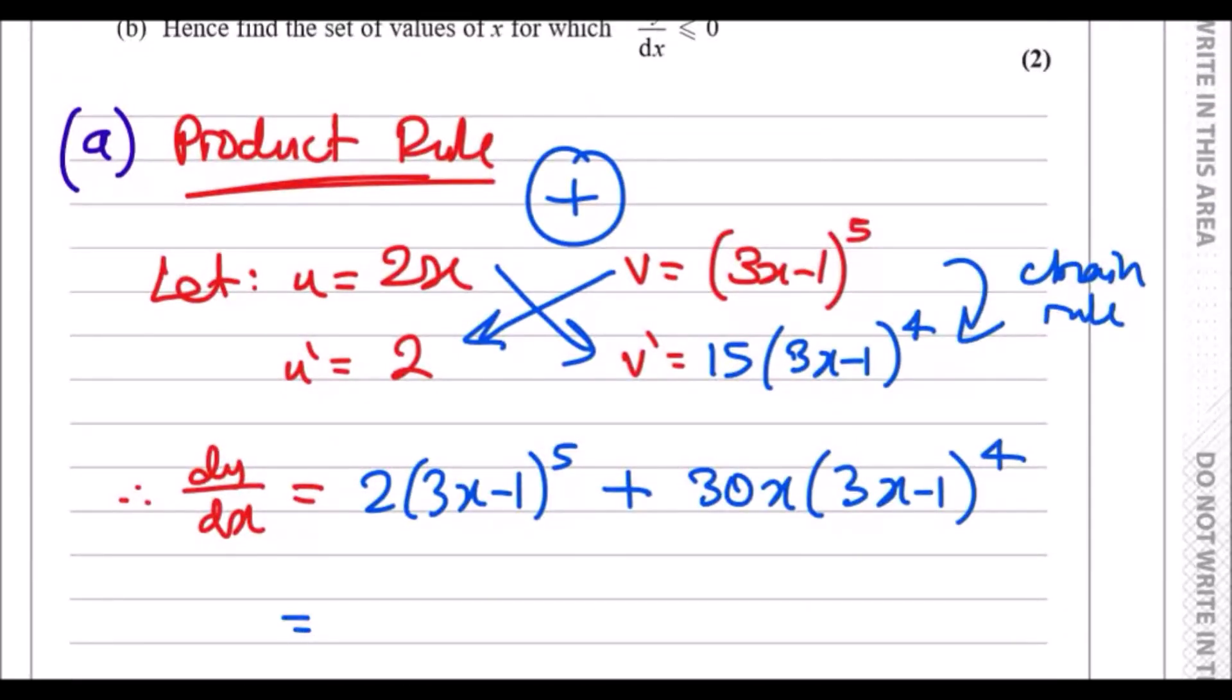Now factorize and collect like terms. This is the final answer but to get to it, look at the expression and realize both terms have (3x-1) to at least the 4th power. Factorize (3x-1)^4 and 2 outside.